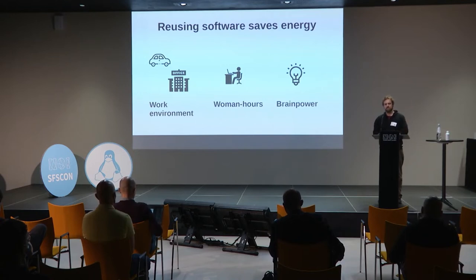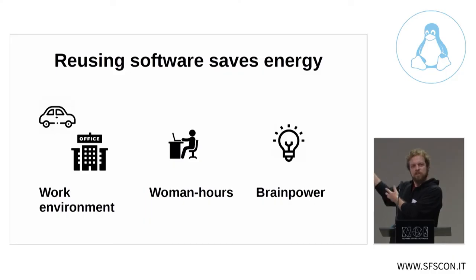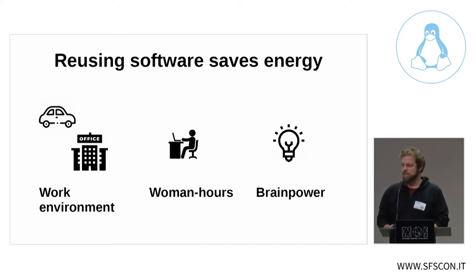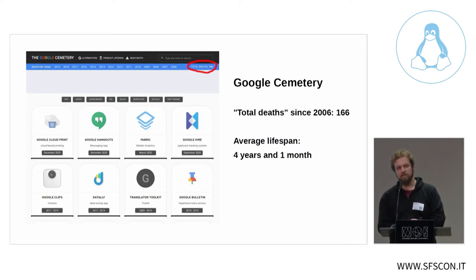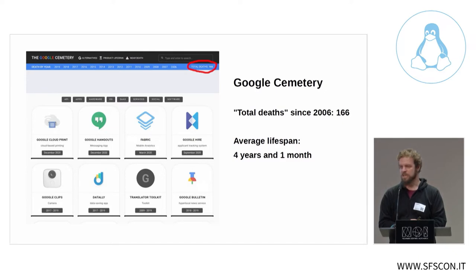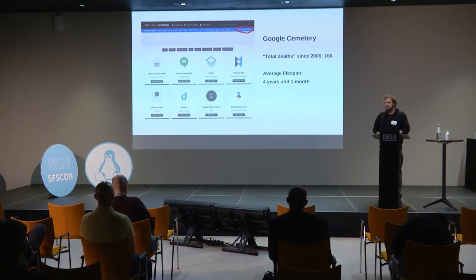Many of us are aware that when we run software we need energy to run it, but we also need energy beforehand to produce the software — to write it. Before corona, for example, you were driving to the office, turning on the lights, running air conditioning, spending a lot of person-hours encoding the project. There's a lot of energy invested already, but unfortunately very often not for a long time. This is the famous Google cemetery — it shows all the projects Google is no longer developing. The total death count since 2006 is more than 160, so more than 10 per year, and the average lifespan of a Google product seems to be four years and one month.